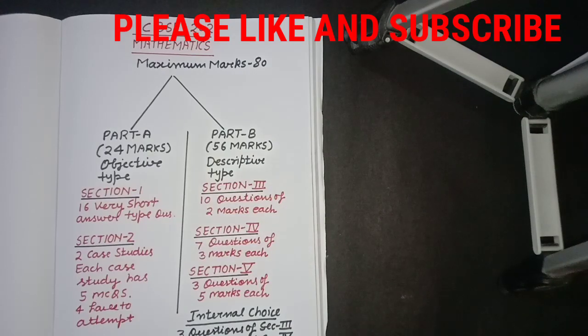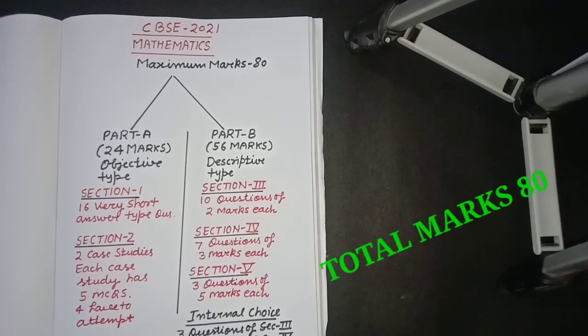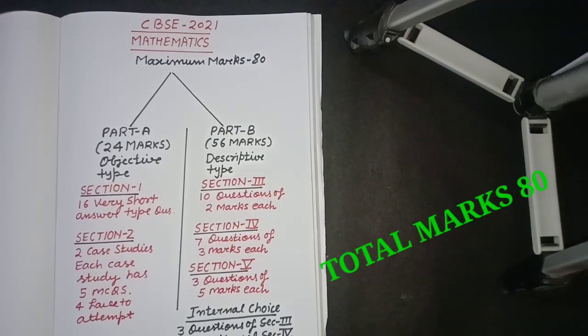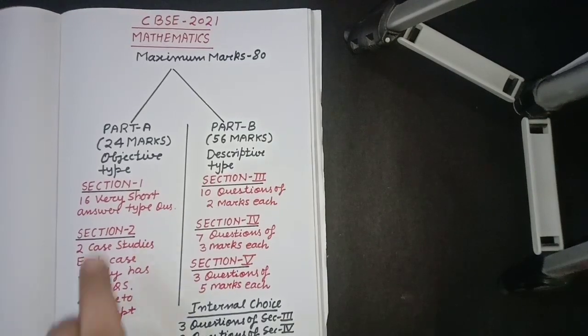Hello students, how are you? Expecting fruitful circumstances for you for board exam. Here is class 12 2021 mathematics new pattern. Maximum marks are total 80 marks and the question paper will consist of two parts: Part A and Part B.